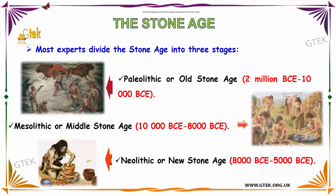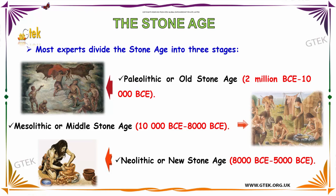Most experts divide the Stone Age into three stages. The first is the Paleolithic, or Old Stone Age, spanning 2 million BCE to 10,000 BCE. The second is the Mesolithic, or Middle Stone Age, from 10,000 BCE to 8,000 BCE. The third stage is the Neolithic, or New Stone Age, from 8,000 BCE to 5,000 BCE. You can see the three stages of the Stone Age here.